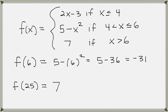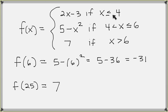So f of 25 equals 7, and that would be the same for any number bigger than 6 — anything that makes that condition true outputs 7. To summarize: you have your conditions on the right side and your formulas on the left. When you want to evaluate the function at a specific number, scan through the conditions to find which one is true for that number, then plug your number into the corresponding formula and simplify to get the output.